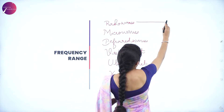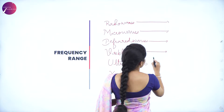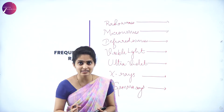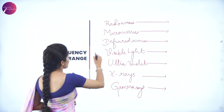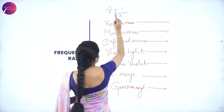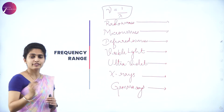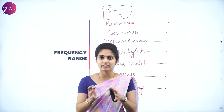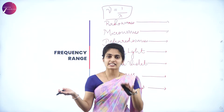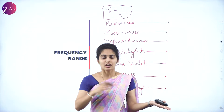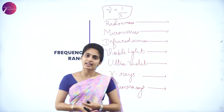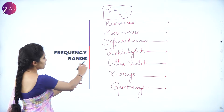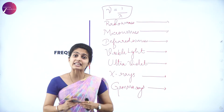Down the table, frequency increases but wavelength decreases because of the formula ν = c/λ, where ν is frequency and λ is wavelength. So frequency and wavelength are inversely proportional — however frequency acts, the opposite is true for wavelength. Higher the frequency, lower the wavelength.